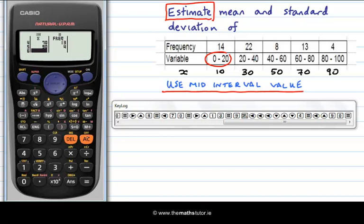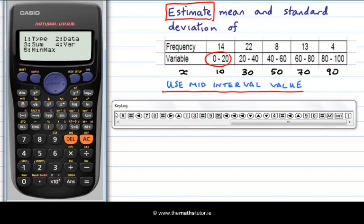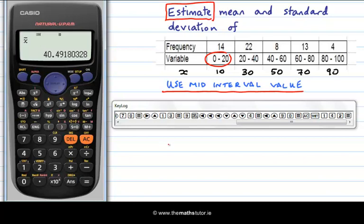Now we have our data in, we hit AC, we hit Shift, 1, 4 for var, 2 for X bar, and we see that our average is 40.49.